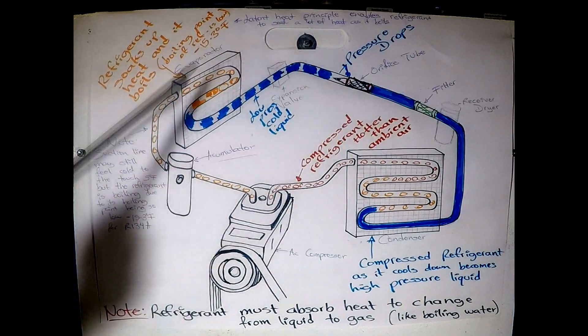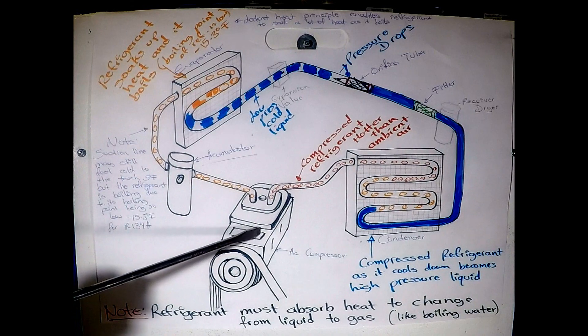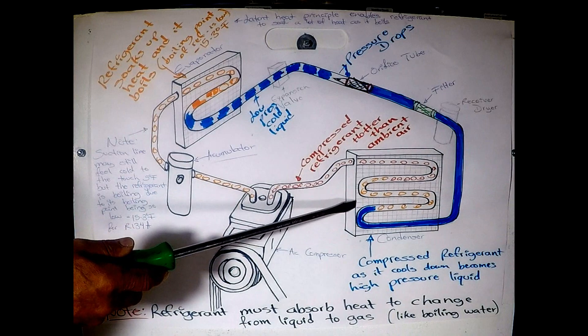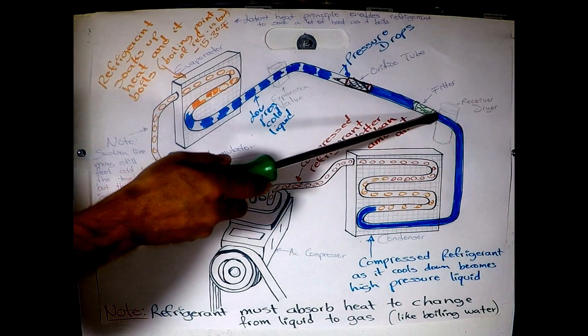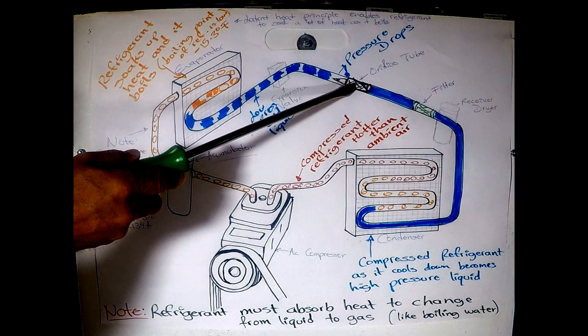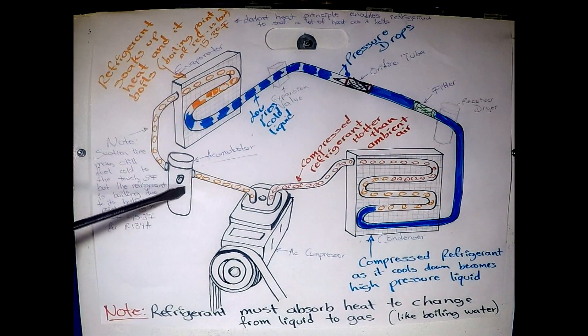Okay, so before I start explaining the operation of the system, let's go over the components. You've got an AC compressor, then you have an AC condenser. This part is mounted in the front of the radiator, the front of the vehicle. Some manufacturers might put an inline filter on the liquid line, and there's an orifice tube. Then you have the evaporator that's inside the car, and there's an accumulator.